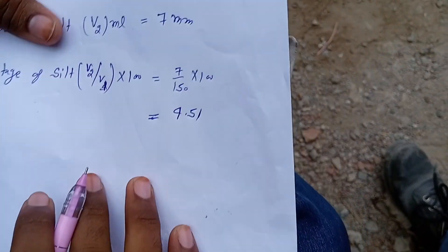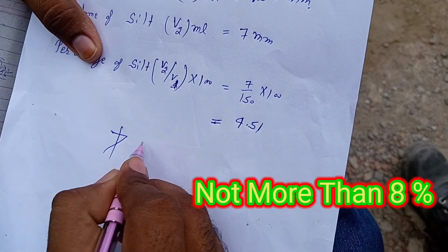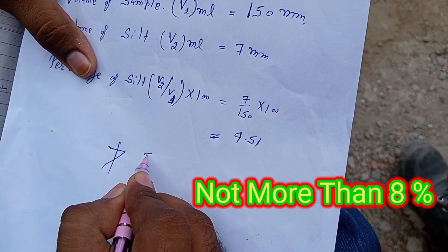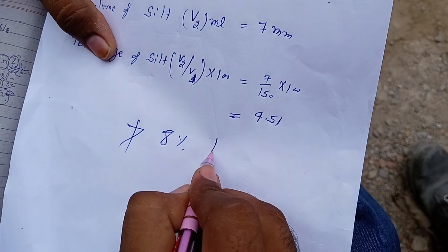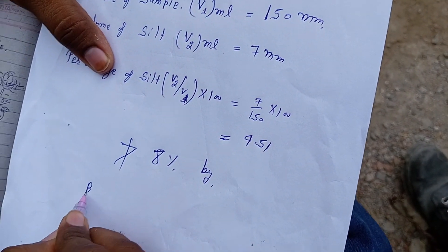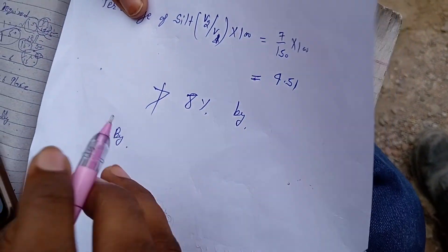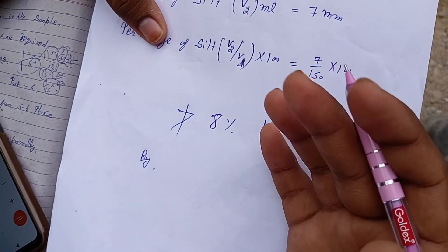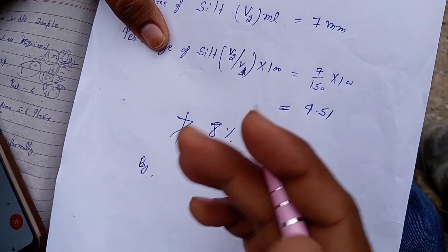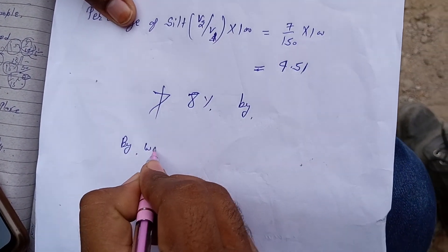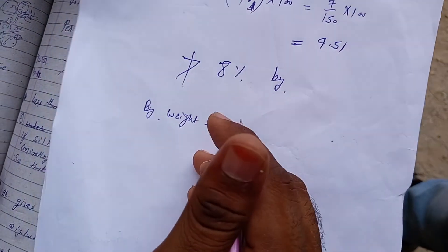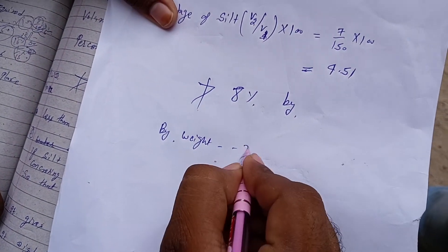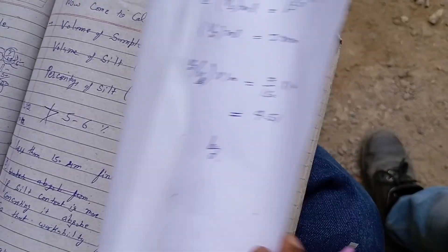As per CPWD guidelines, silt content should not be greater than 8% by volume. By weight, we have also done the silt content test, and in that method it should not exceed 3%.